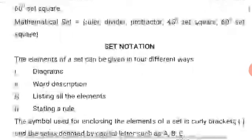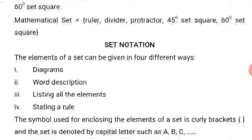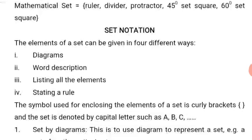Now, let us look at set notation. The elements of a set can be given in four different ways: 1. Diagrams, 2. Word description, 3. Listing all the elements, 4. Stating a rule.